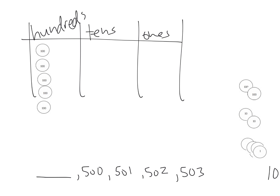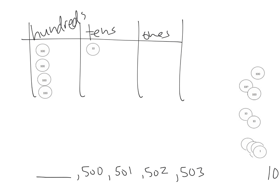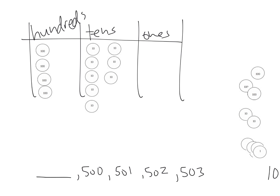We're going to have to do some cashing in. We're going to take this hundred and cash it in for ten tens. When I exchange it, I get ten tens — one, two, three, four, five, six, seven, eight, nine, ten. So now I have four hundreds and ten tens. That's still 500. Do I have enough to take away another one? No.